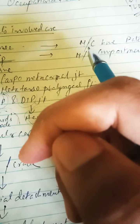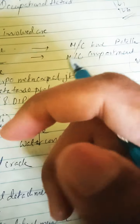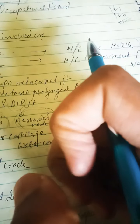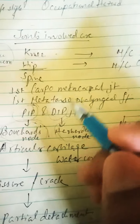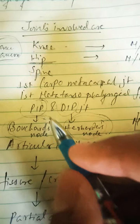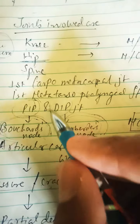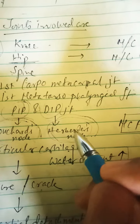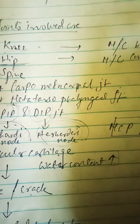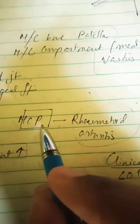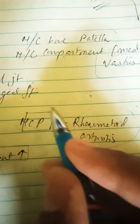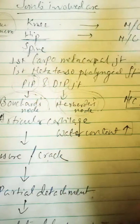The PIP and DIP joints are very much involved. In the PIP joint, Bouchard's nodes are present, and in the DIP joint, Heberden's nodes are present. In contrast, if it is rheumatoid arthritis, then it involves the metacarpophalangeal (MCP) joint.